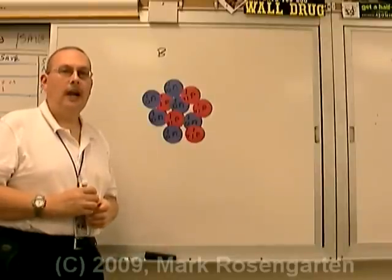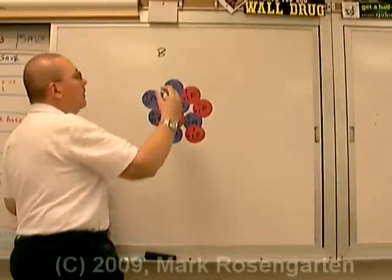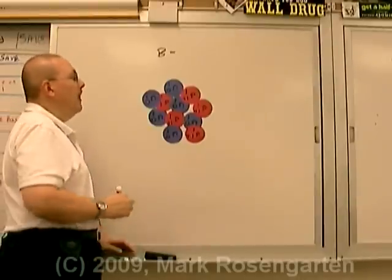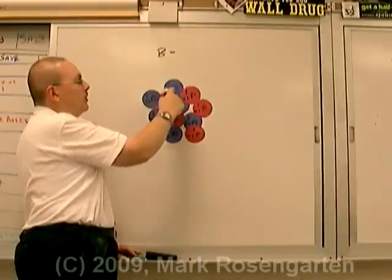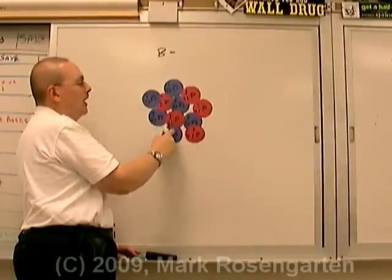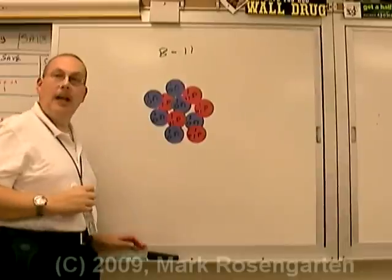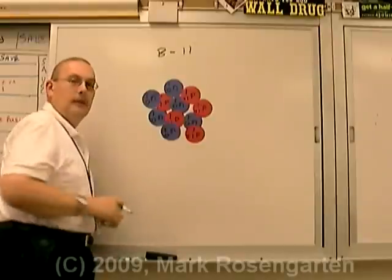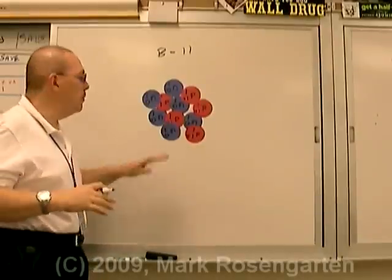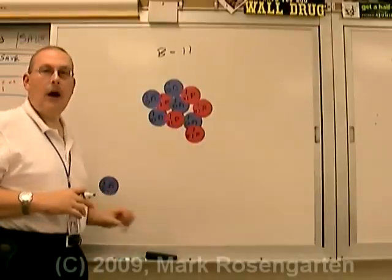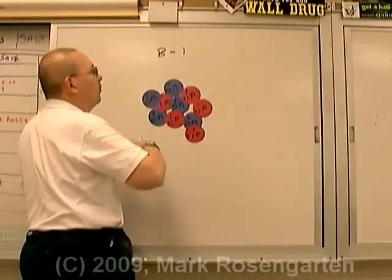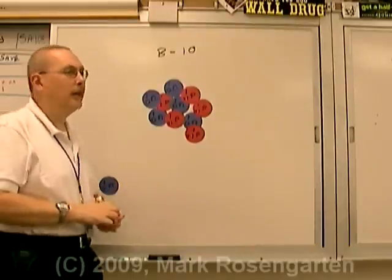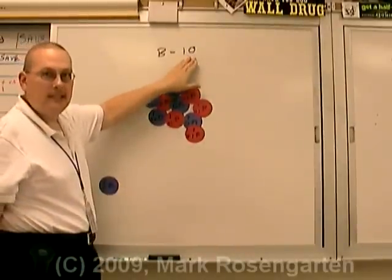Another way of identifying isotopes is by writing the symbol of the element followed by the mass of that particular isotope. This has a mass of one, two, three, four, five, six, seven, eight, nine, 10, 11. This is known as boron 11. And the 11 refers to the mass number of the isotope. If, on the other hand, we removed a neutron, now our isotope would weigh one less, our isotope would be identified as boron 10. So the isotope can also be identified by what the mass of that isotope is.